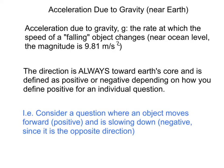For instance, think about this blue part down here. Consider a question where an object moves forward. So let's say the object moves this way, and we define that to be positive. But it's slowing down, which means that its velocity is changing in this direction. So A is in that direction, which means A is negative.